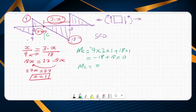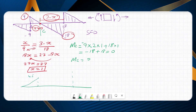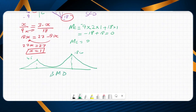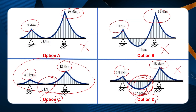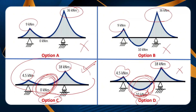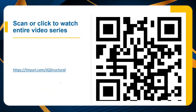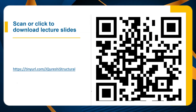The bending moment diagram shows 4.5 kNm at the left overhang, 18 kNm at the right overhang, and zero kNm at the central maximum point. Going back to the options, option D is incorrect because it shows 10 kNm at the centre, which is not possible. Option C is the correct answer, with the central bending moment equal to zero kNm. If you enjoyed this video, click the URL or scan the barcode to see the full structural behavior video series and download the slides.